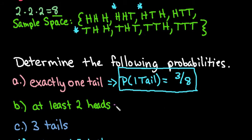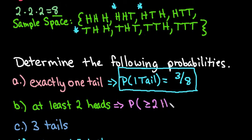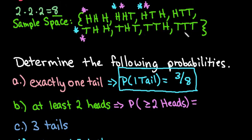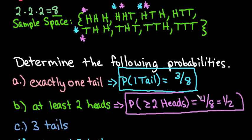For at least two heads: 'at least two' means greater than or equal to two. Going through the outcomes, the first has three heads, the second has two, the third has two, the fourth has two, and the rest have only one. So four out of eight, or one half, of our combinations have at least two heads.